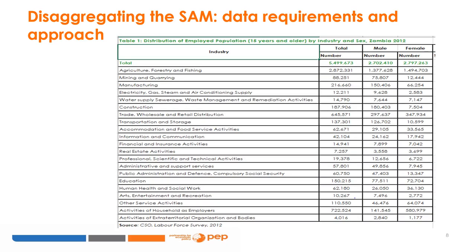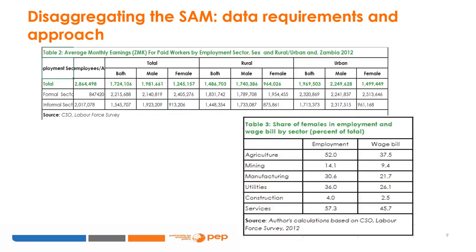The decomposition of the labor accounts requires data on employment, generally available in labor force surveys or household income surveys. In the case of Zambia, the Central Statistical Office conducted an LFS in 2012. The following data allows us to decompose the labor accounts. In Table 1, we have information on the number of workers by industry and sex. Table 2 provides information on average monthly earnings distinguished by sex and rural or urban location.